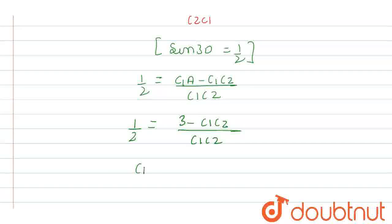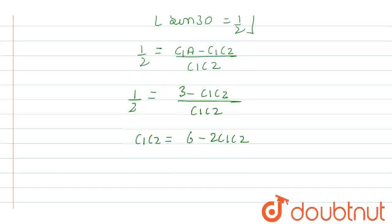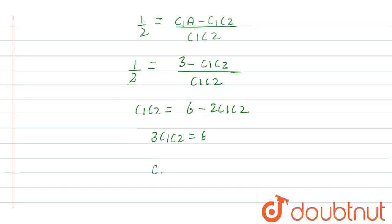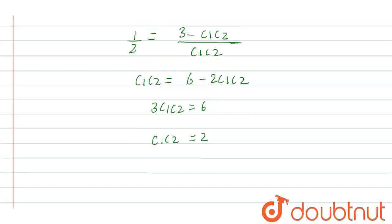From here, after cross multiplication, C1C2 = 6 - 2·C1C2. So, from here we get 3·C1C2 = 6. Therefore, C1C2 = 2, and C1C2 is the distance between center 1 and center 2.